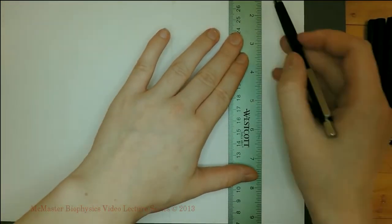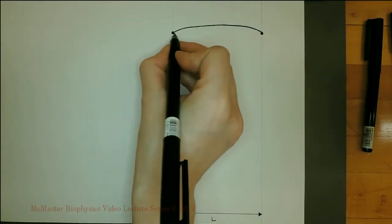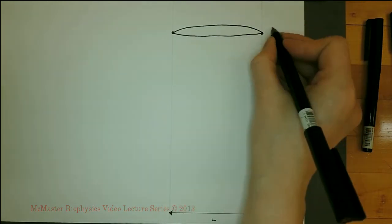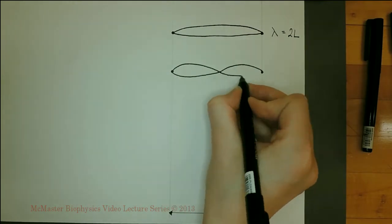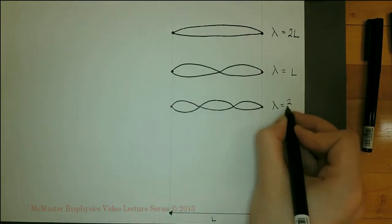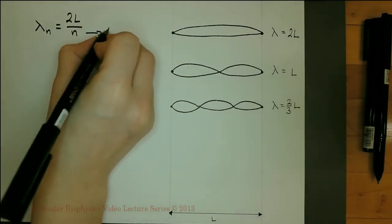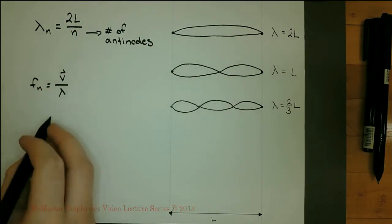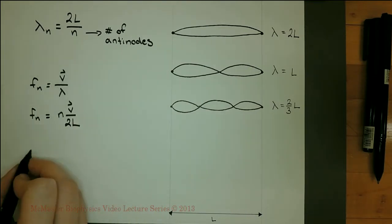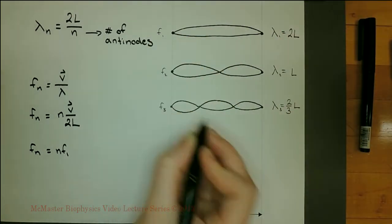In order for a standing wave to be created on a medium with two fixed ends, there must be a node at each end. The wavelengths of the possible standing waves depend on the length of the string. The largest wavelength is 2L, where the only nodes are at the ends of the string. The size of the wavelengths decreases as the number of nodes increases. Wavelengths of the standing waves are equal to 2L divided by n, where n is the number of antinodes. Frequency can be calculated by dividing the wave velocity by the wavelength. Subsequent frequencies can be calculated by multiplying the fundamental frequency, f sub 1, by n.